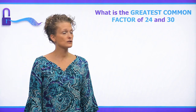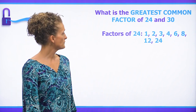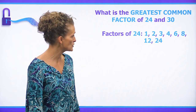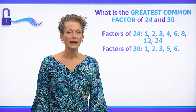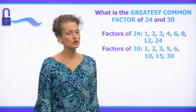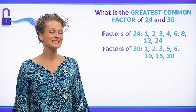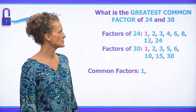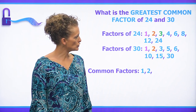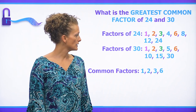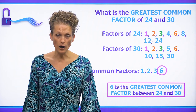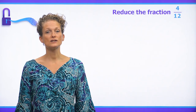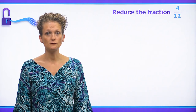Let's find the greatest common factor of 24 and 30. The factors of 24 are 1, 2, 3, 4, 6, 8, 12, and 24. The factors of 30 are 1, 2, 3, 5, 6, 10, 15, and 30. The common factors — the numbers on both lists — are 1, 2, 3, and 6. The biggest number of the common factors is 6, so 6 is the greatest common factor between 24 and 30.